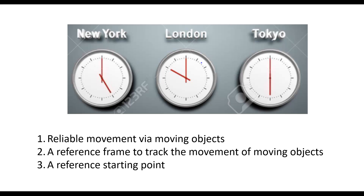What are some of the things we need for a functional wall clock? One is the reliable movement of the moving objects — specifically the long arm and the short arm. Then we also need a reference frame to track the movement of these moving objects, which is that circle of 360 degrees first divided into 12 different parts and then also 60 different parts — so 5 times 12, that is 60 — giving us 12 hours and 60 minutes.